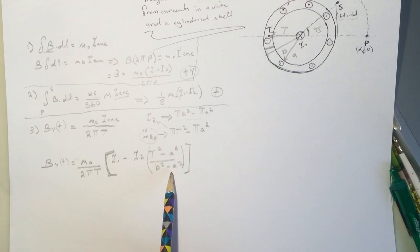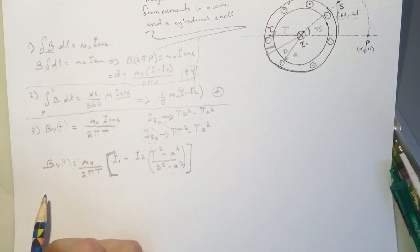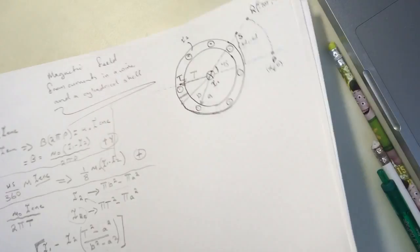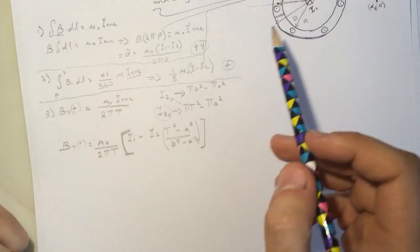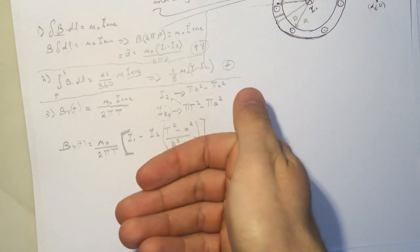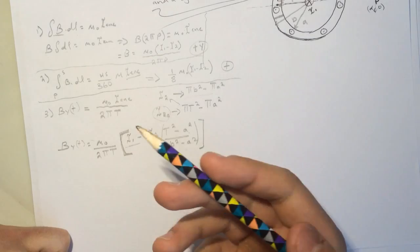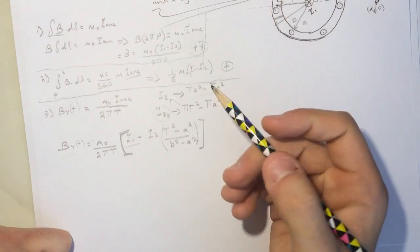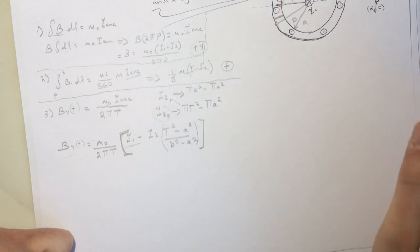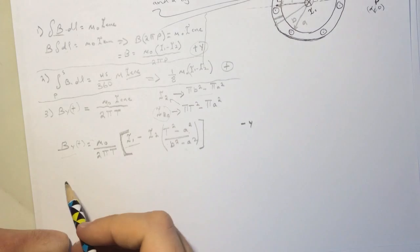To get the current enclosed. So the direction of this guy depends on which one is bigger too. So if I1 is bigger than, look at here, point your thumb with the current going into the page, it's going up. If this was bigger, then the magnetic field will be pointing up. If this guy was bigger, then it's going to be pointing down. And in my case, it was pointing down, so I got a negative number.